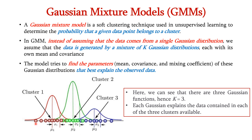All data points belonging to cluster 1 fall under this Gaussian component, cluster 2 under this one, and cluster 3 under this one. But data points lying in the overlapping range can belong to either cluster 1 or cluster 2, since both Gaussian components overlap there. Similarly, data in another range can belong to either cluster 2 or cluster 3. So the data is not from a single Gaussian, but a mixture of k Gaussian distributions.